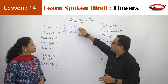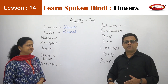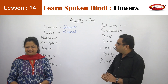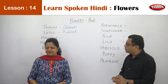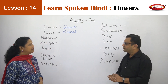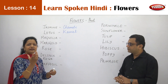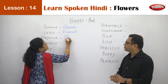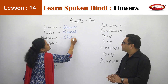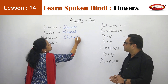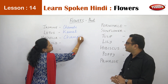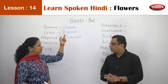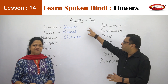Now Chameli and Kamal are both names of girls also. Then we have the Magnolia. Magnolia is another fragrant flower that is called Champa. Champa and Chameli are the combination of flowers which are generally used by ladies — Champa and Chameli.